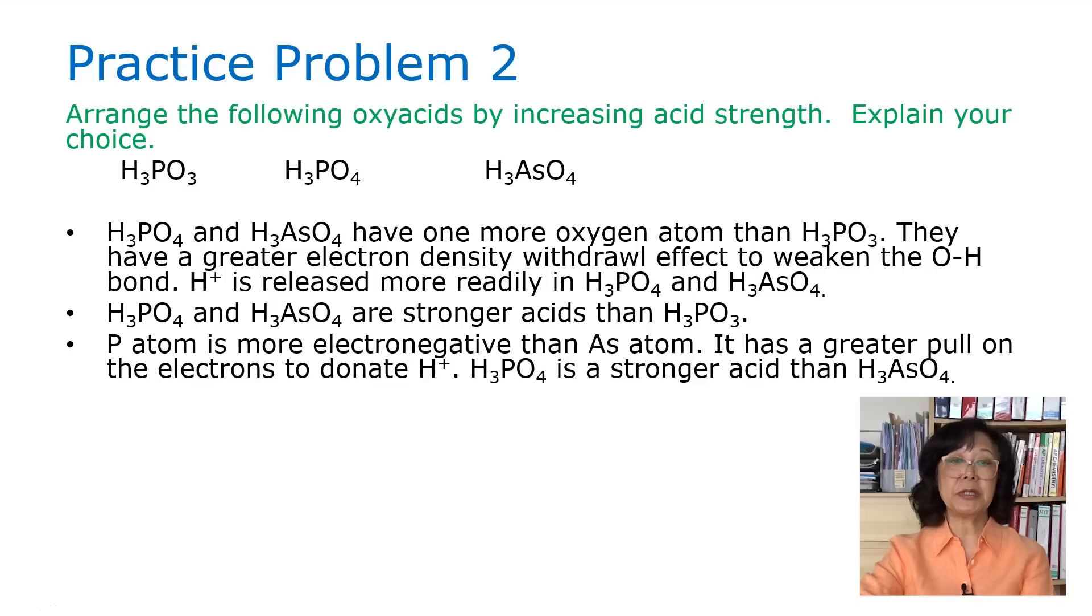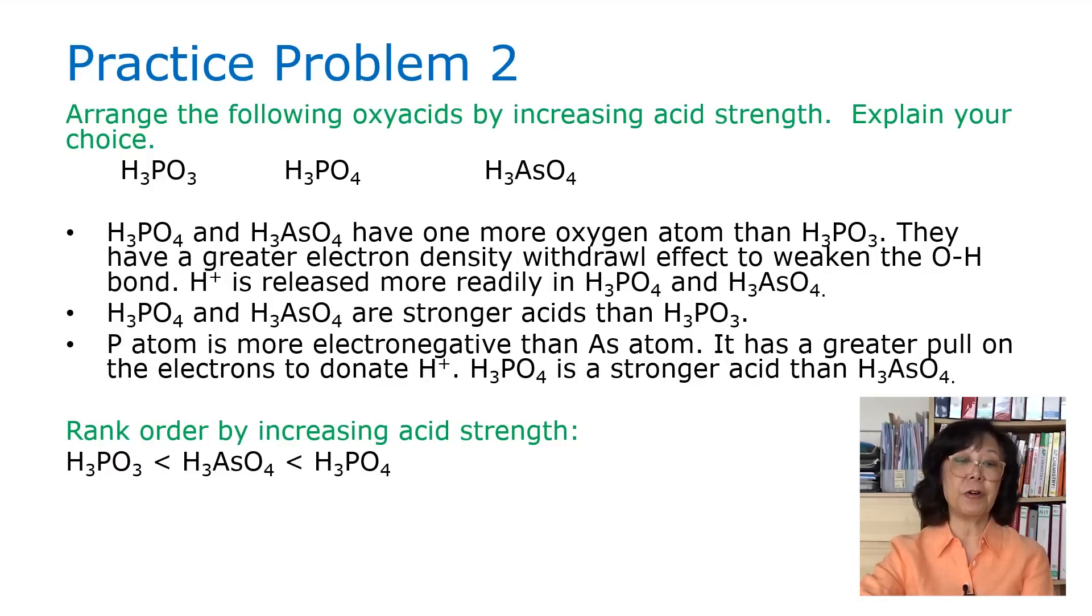With regard to the phosphorous atom and the arsenic atom, phosphorous atom is more electronegative than arsenic. It has a greater pull on the electron to donate hydrogen ion. So H3PO4 is stronger acid than H3AsO4. Therefore, the ranking is the strongest is phosphoric acid H3PO4, followed by arsenic acid H3AsO4, followed by phosphorous acid H3PO3. We're ranking them by the order of the number of oxygen atoms and also the electronegativity.